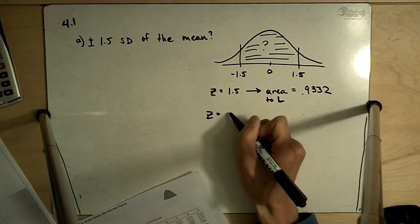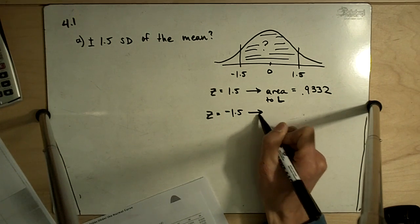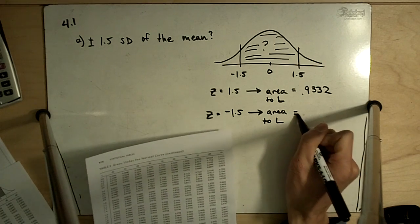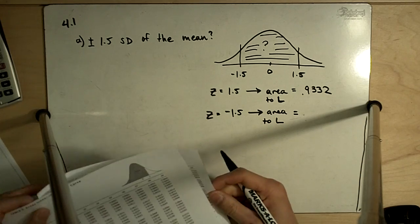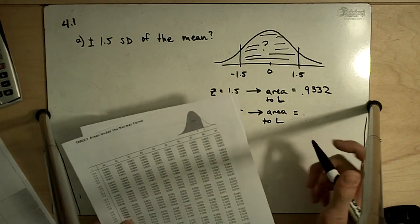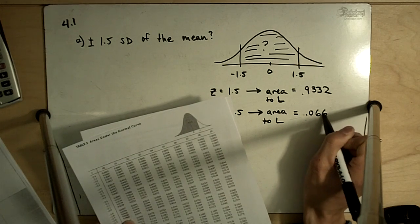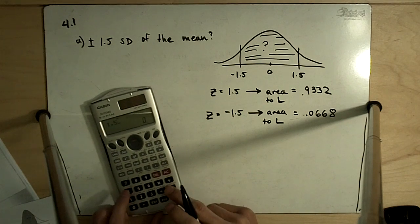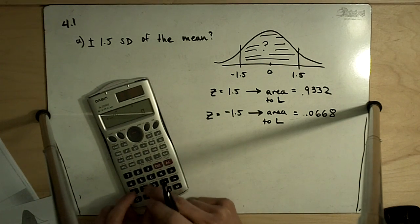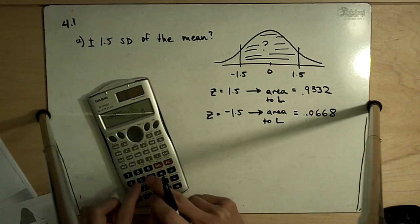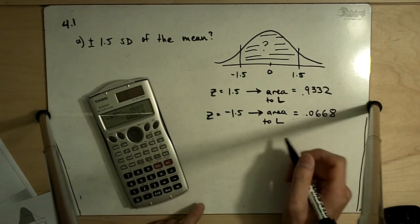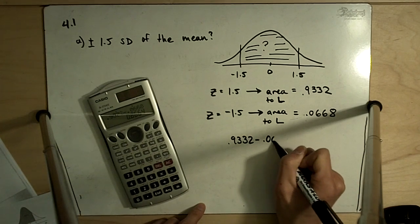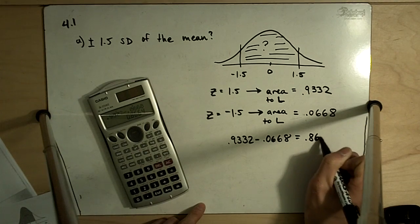Then we look up Z equal to negative 1.5, and the area to the left there is equal to 0.0668, which means 0.9332 minus 0.0668 is equal to 0.8664.